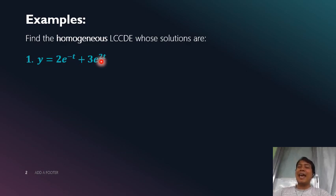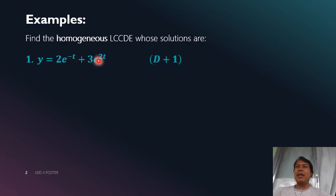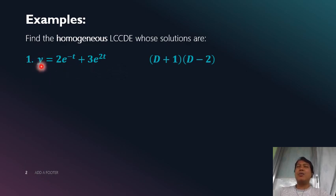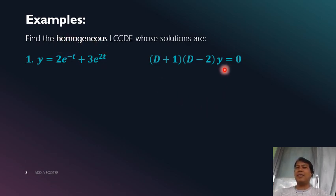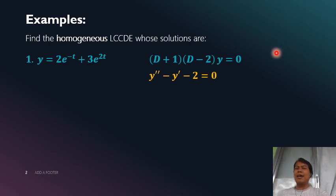If we have the complementary function, we can construct the differential equation using the differential operator. Using variable M, the factors are (M + 1)(M - 2). We replace M with the differential operator D, giving us (D + 1)(D - 2). Then we add the dependent variable y and equate to zero, giving (D + 1)(D - 2)y = 0, because we need a homogeneous LCCDE.